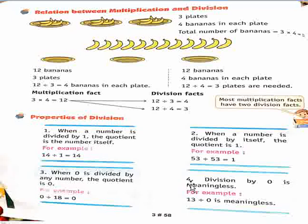And the fourth property is: division by zero is meaningless. For example, 13 divided by zero is meaningless.